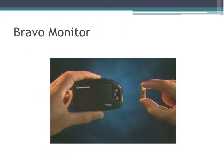This slide depicts the small cell phone-sized device that you wear on your belt to record messages from the small pill that's placed above your esophagus and your stomach. The device is turned back in to the gastroenterologist for analysis after the testing is done.